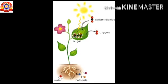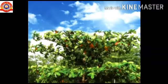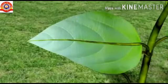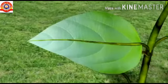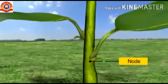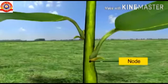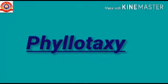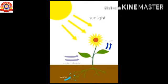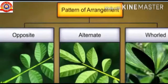We have already seen that photosynthesis takes place in the leaves of a plant. Observe the plants around you — on which part of the plant does sunlight fall more? Yes, of course, the answer is leaves. Different plants have different patterns of arrangement of their leaves. This arrangement of leaves on a stem or branch is called phyllotaxy. It aims to position the leaves so they can receive maximum sunlight, which is necessary for photosynthesis. There are mainly three types of phyllotaxy: opposite phyllotaxy, alternate phyllotaxy, and whorled phyllotaxy.